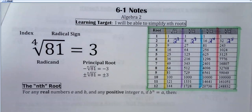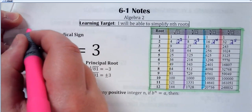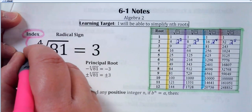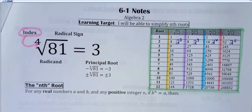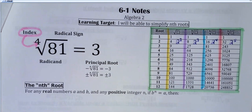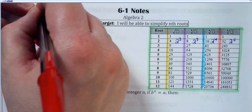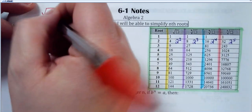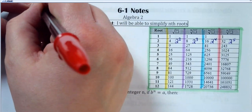Just to give you a couple little definitions: what we call the index of a root is the type of root you're taking. So my little example here says the fourth root of 81 is equal to 3. So this is a fourth root, so the index is 4. What you guys are used to seeing probably with a square root is just the radical sign — they don't write the number for the index in a square root. So if you just see a radical sign, the square root is implied.